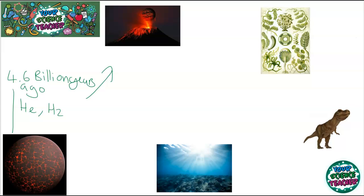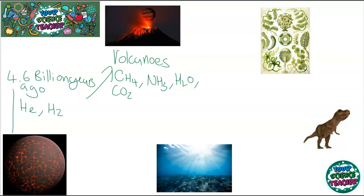After some time the Earth started to calm down a little bit after being formed, but there were loads of volcanoes around. Volcanic eruptions put tons and tons of methane, ammonia, water vapor, and carbon dioxide into our atmosphere. Carbon dioxide was actually the most prominent gas in the atmosphere during the early Earth's time, and this lasted for millions and millions of years.